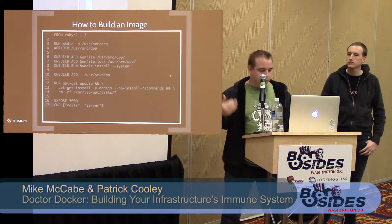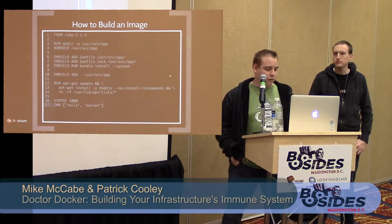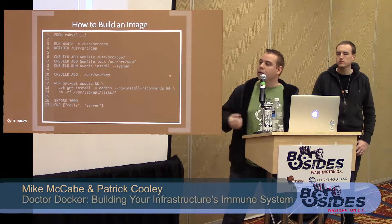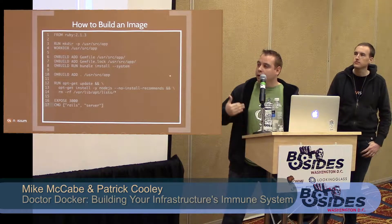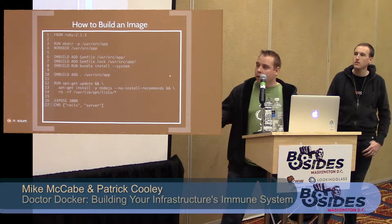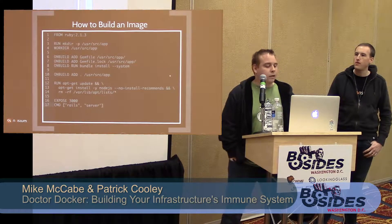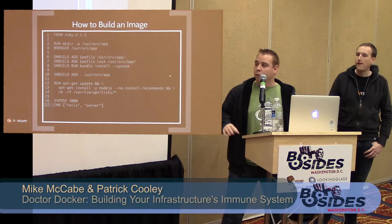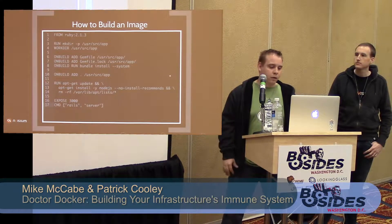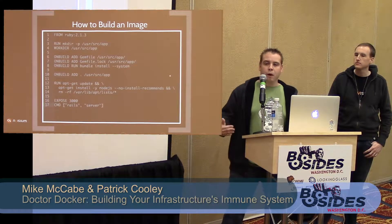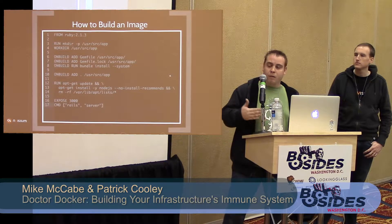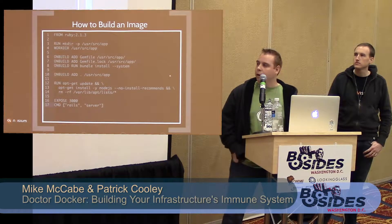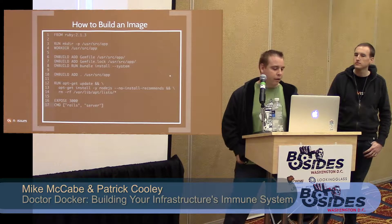We're also pulling down some stuff from apt-get — Node.js, for example. EXPOSE 3000 means we're telling the container that when it runs, to allow Docker to access port 3000. This doesn't give access to the root host with EXPOSE alone — there are more commands you have to do. But if you don't expose it to Docker, Docker can't expose it to the host system when you need to do that later.